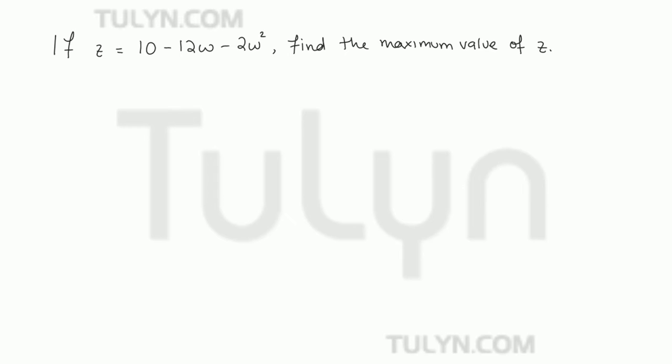If z is equal to 10 minus 12w minus 2w squared, find the maximum value of z.